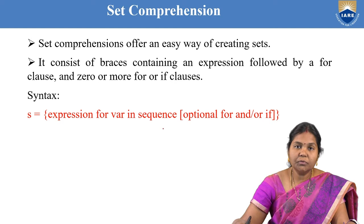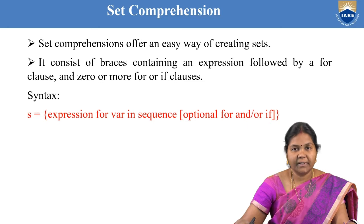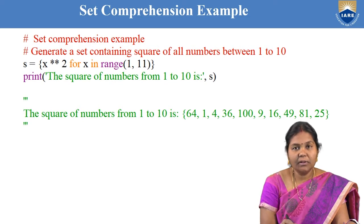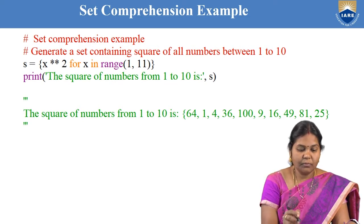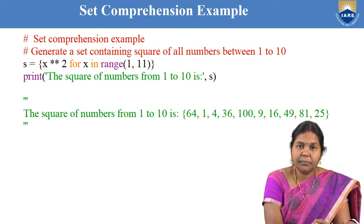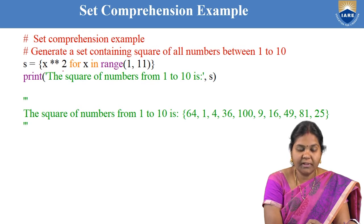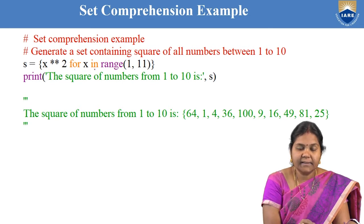Now let us see some examples of how to use set comprehension and how to create sets in an easier way. For example, I want to create a set containing the square of all numbers from 1 to 10. So you write: s = {x**2 for x in range(1, 11)}.